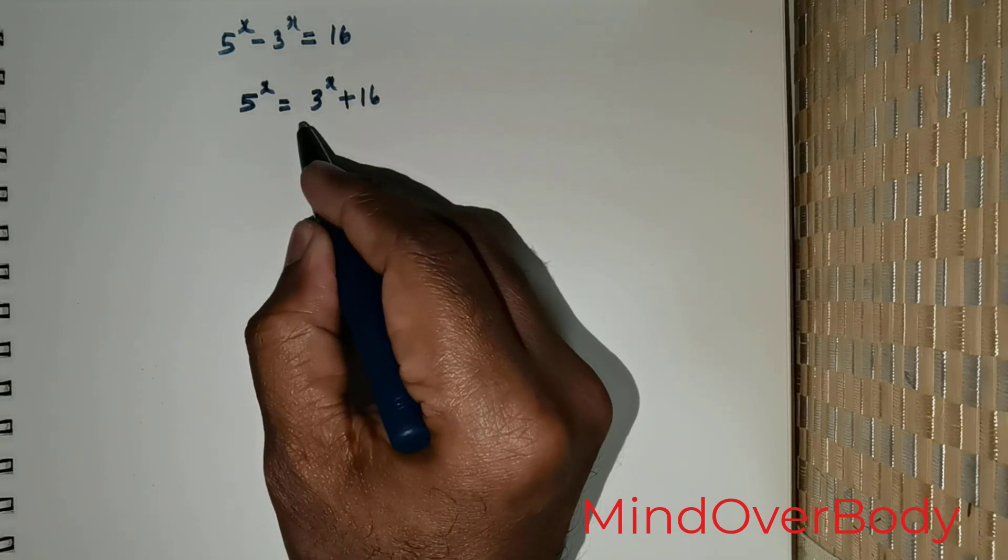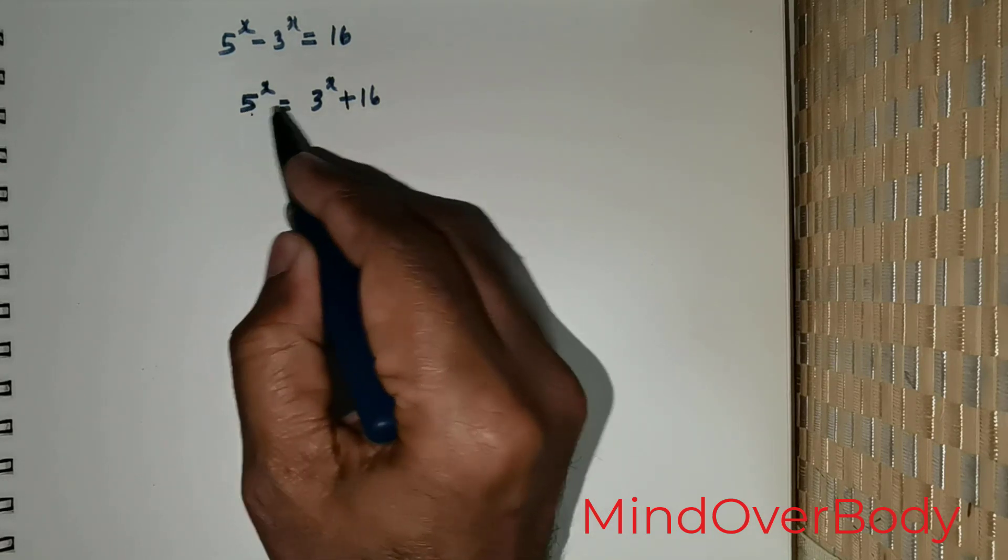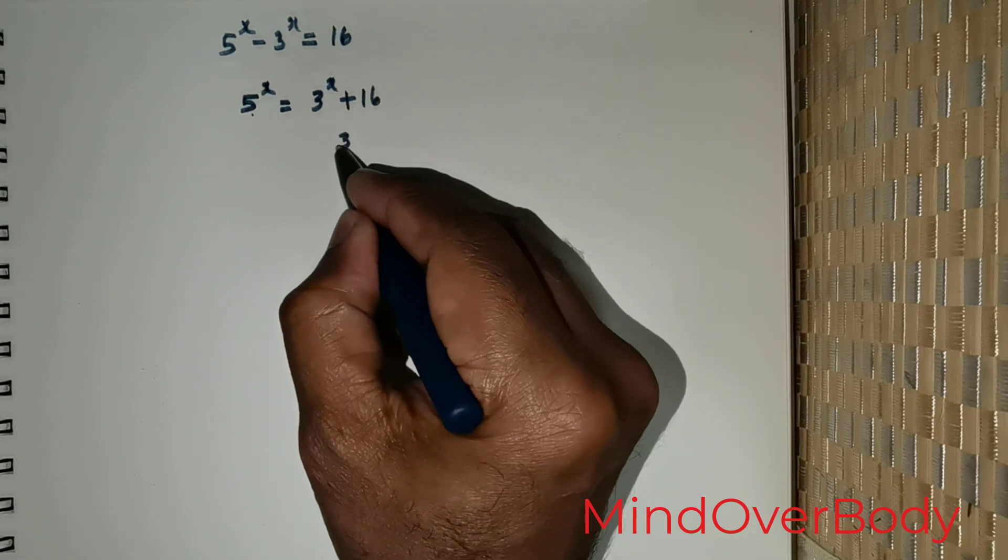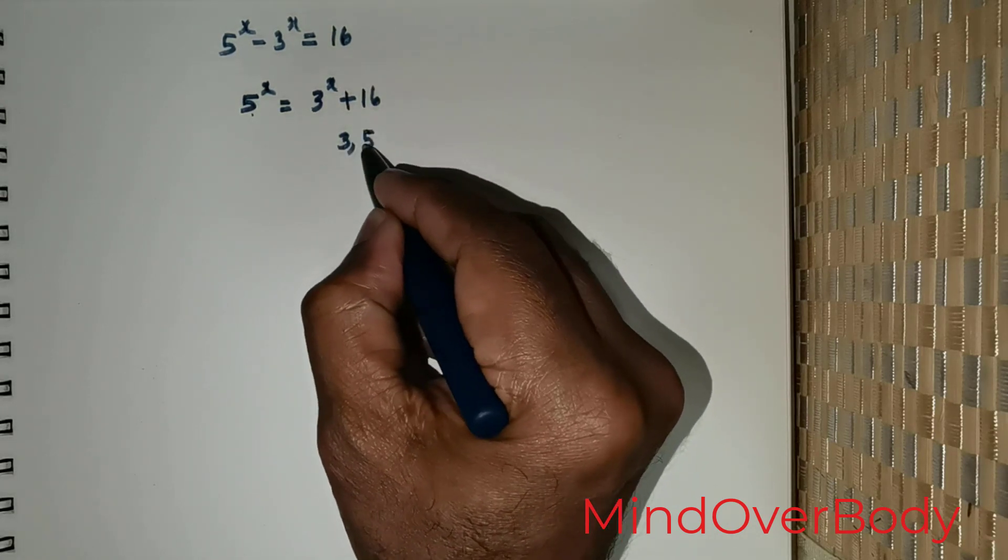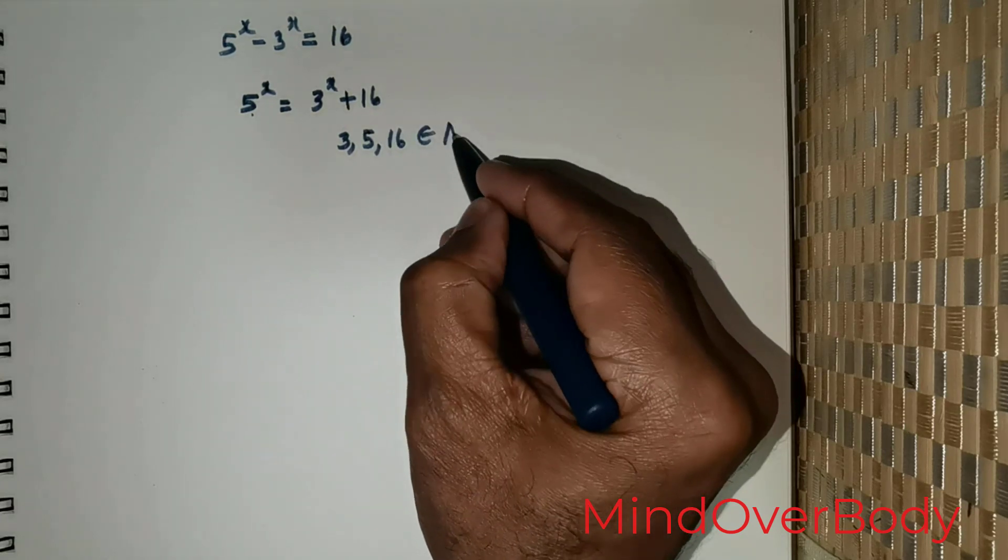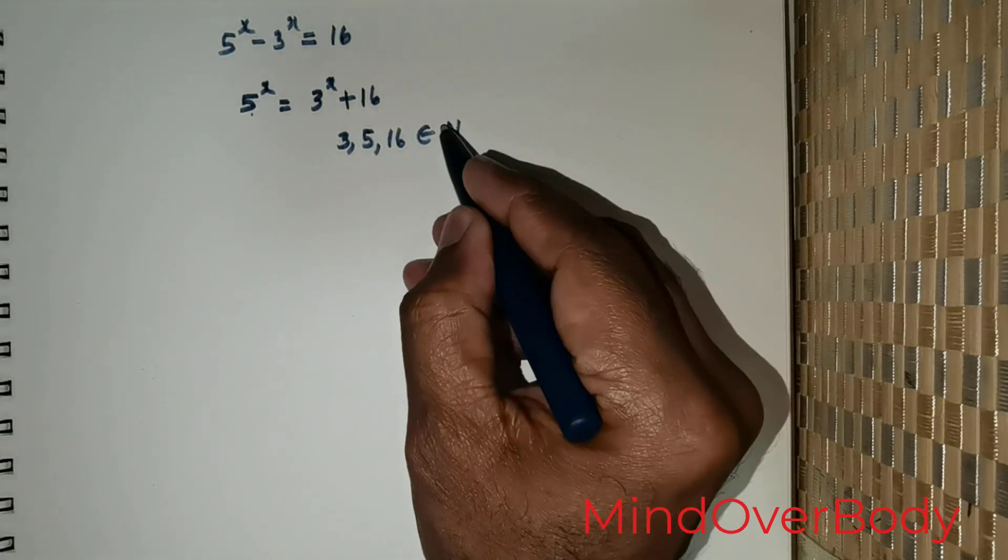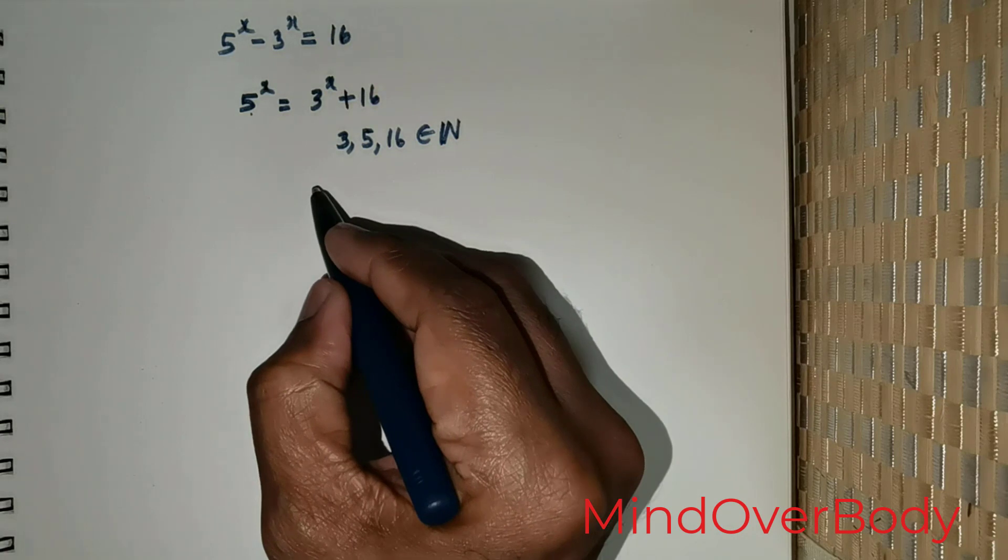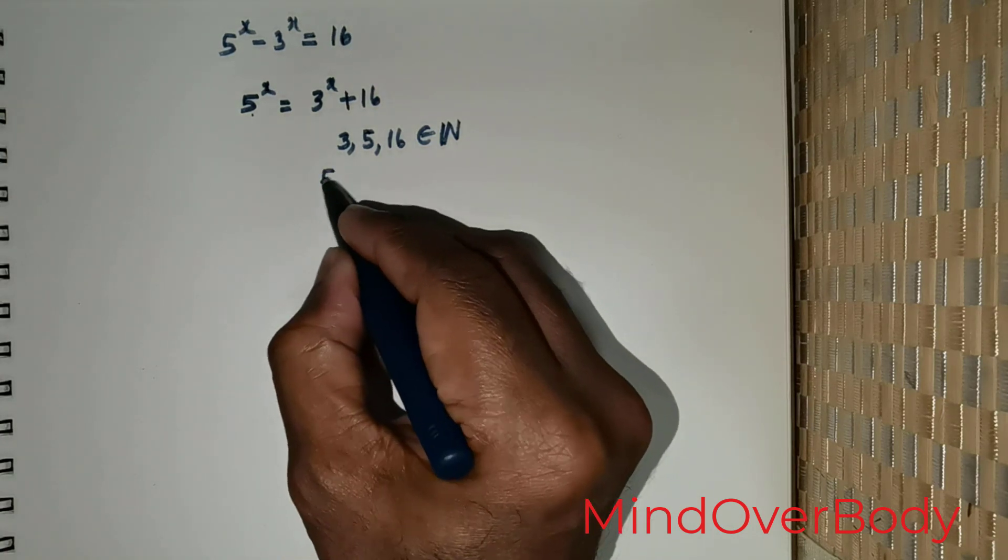I would like to bring your attention to the numbers 5, 3, and 16. Let me write that down: 3, 5, and 16. Clearly, these numbers are elements of the natural numbers. Now, there is a theorem which is known as...